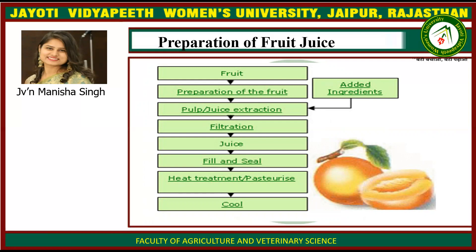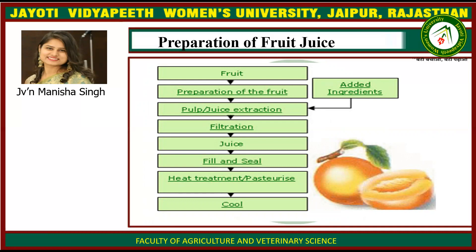This is the flow chart of preparation of fruit juice. First, we take a fruit. Then preparation of that fruit — that means peeling, cutting, scoring, etc. Then pulp or juice extraction: we get the juice from mixers, juicers, etc. Then we filter that juice and the juice is obtained. It is filled and sealed in a container, then heat treated or pasteurized, then cooled.